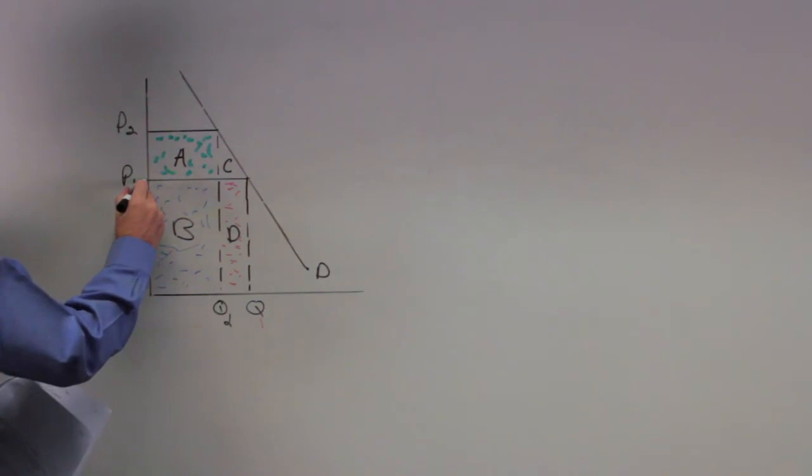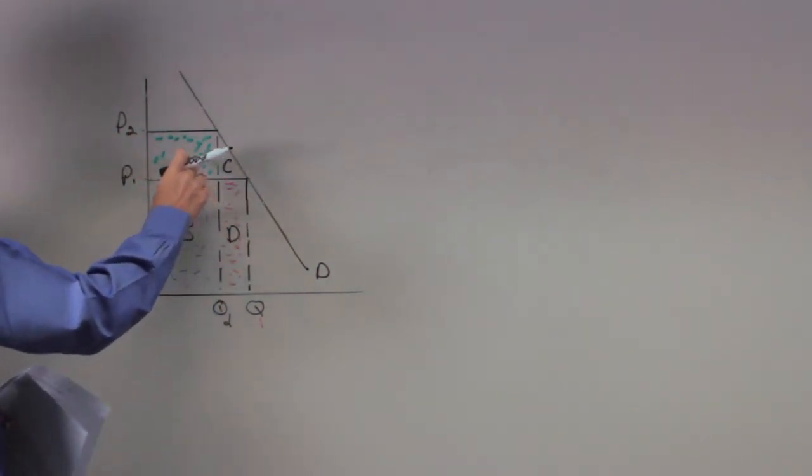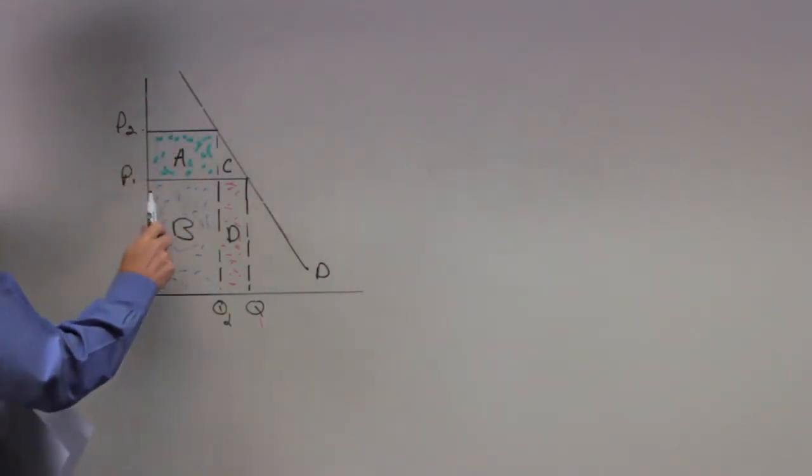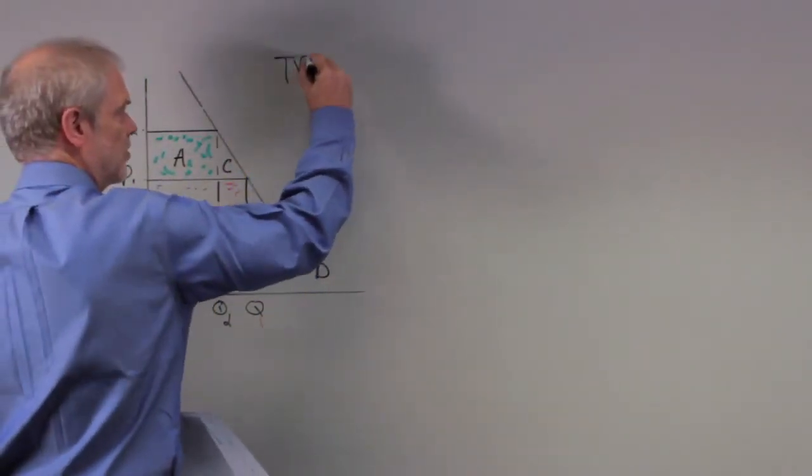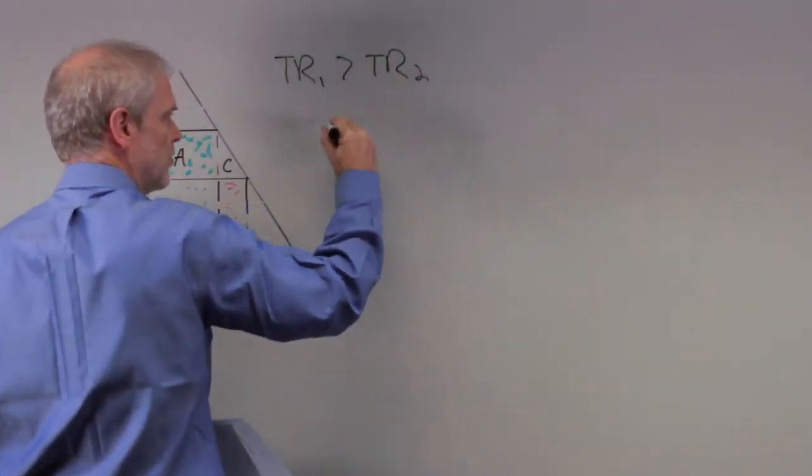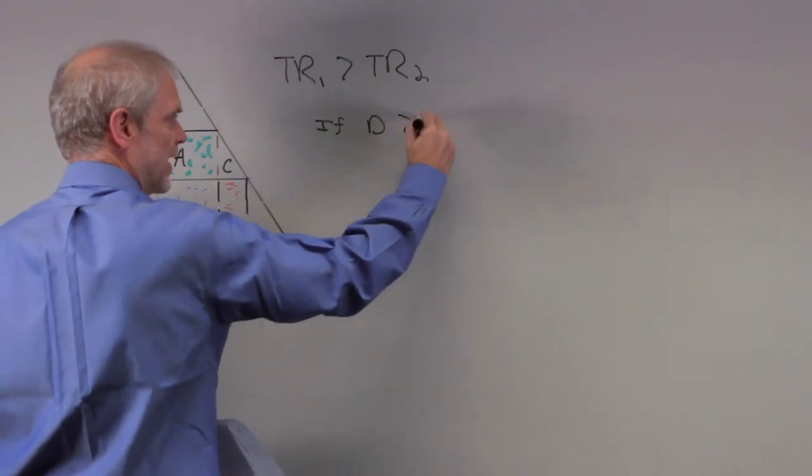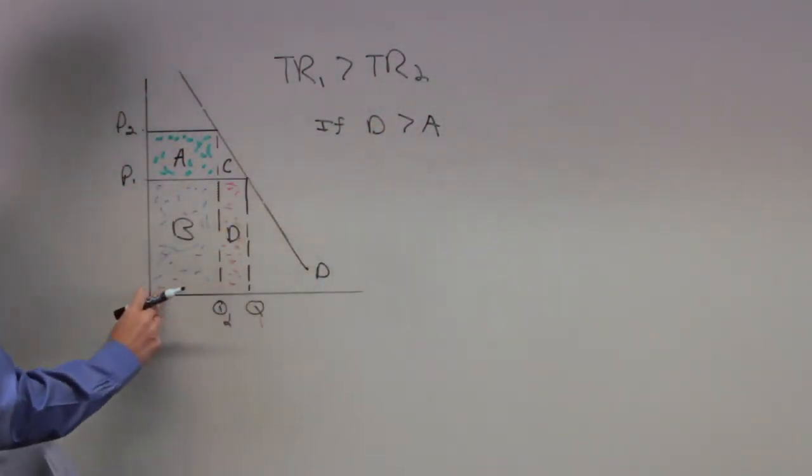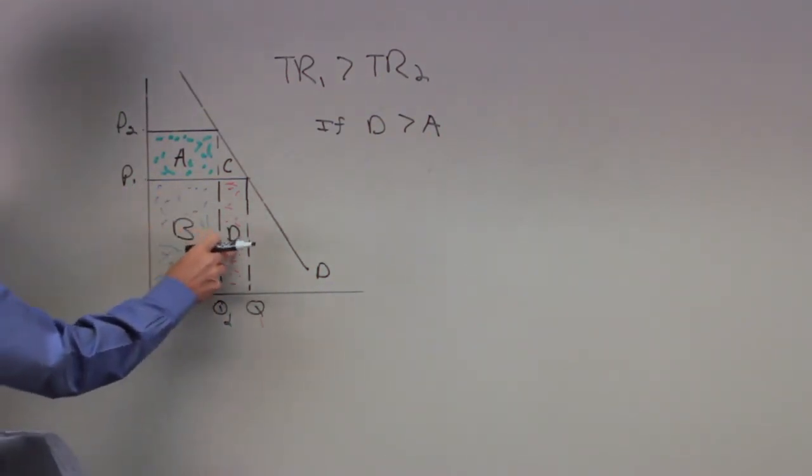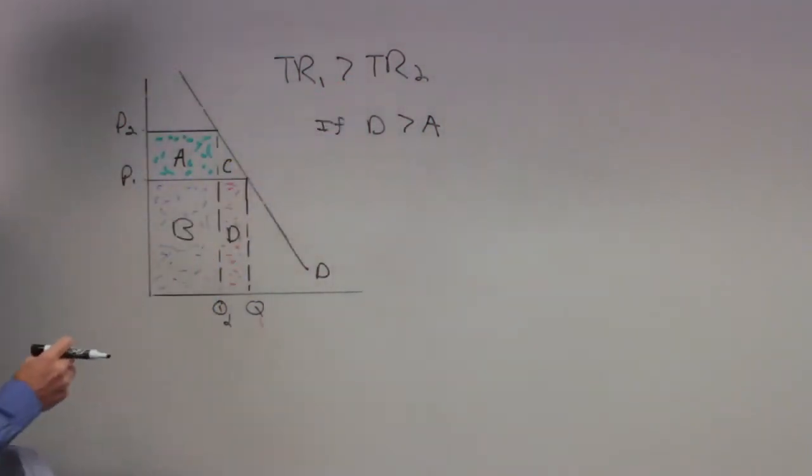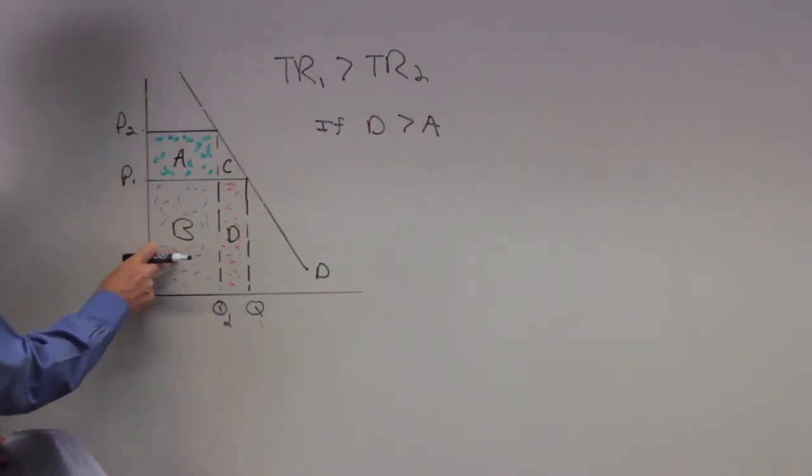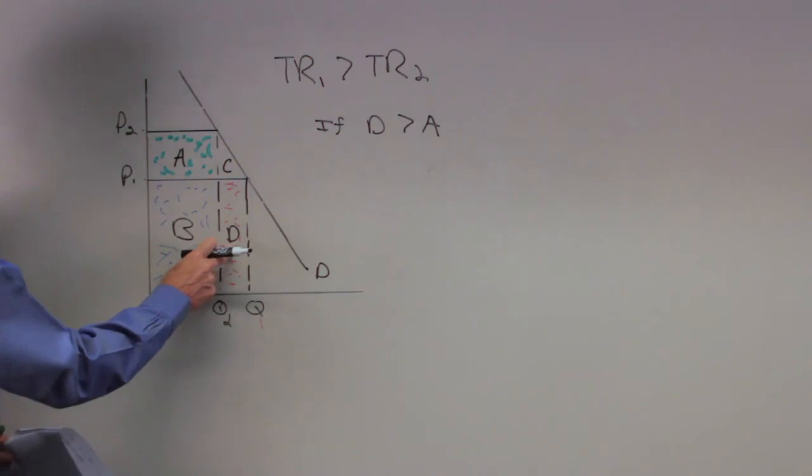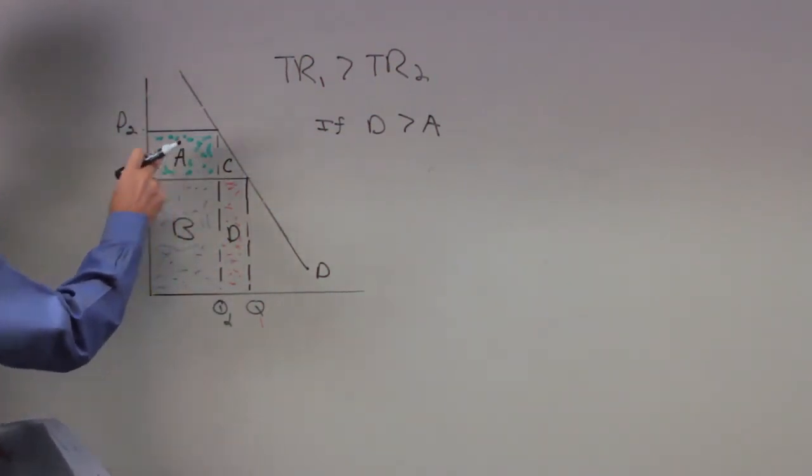They're saying if rectangle D is greater than rectangle A, which means as price goes from P1 to P2, if this D area was greater than this A area, then total revenue at P1 has to be greater than total revenue at P2. Total revenue 1 is this area plus this, and total revenue 2 is this area which includes B and then adds A. Both revenues share the B area. Where they differ is that TR1 has the D area and TR2 has the A area.